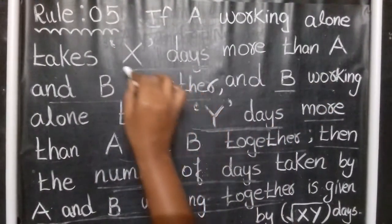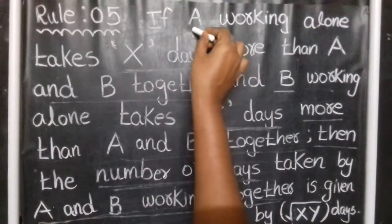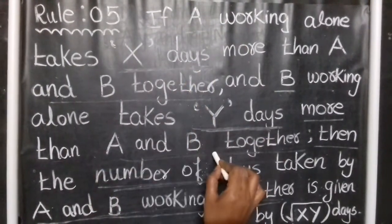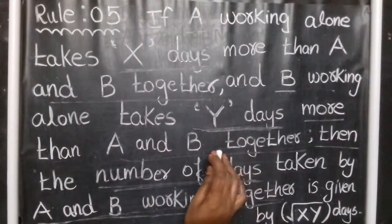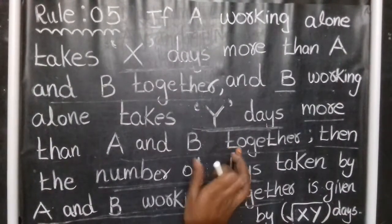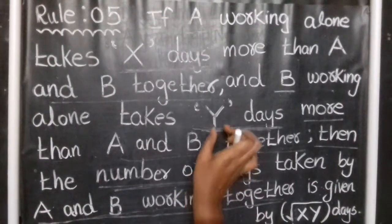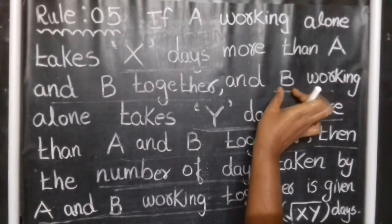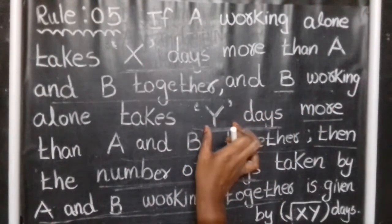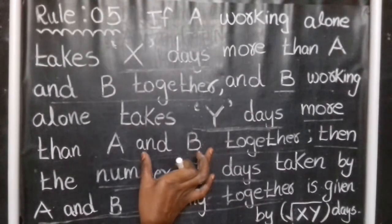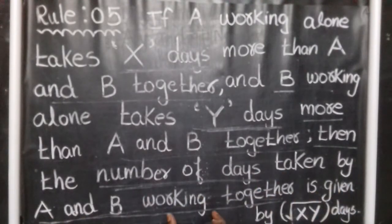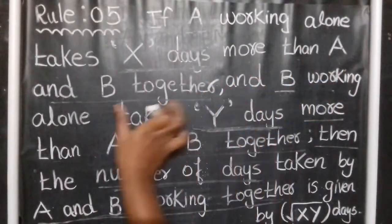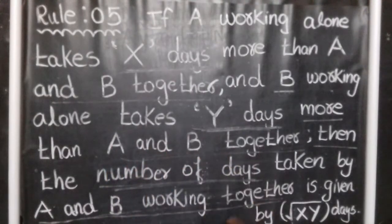So A and B working together — Y days are more than A and B together for B's side. That gives us the number of days taken by A and B together, which we calculate using the root formula.